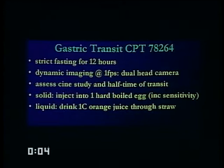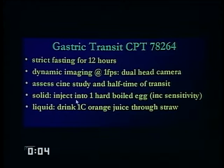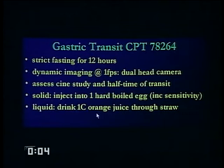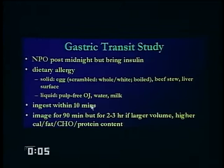Gastric transit studies are done because you have gastrostasis or gastroparesis, typically due to diabetes or some neurogenic problem. You get a very specific meal. If it's a solid meal, you get one hard-boiled egg — no butter, no toast, no bacon. If we're assessing liquid transit time, you drink one cup of orange juice through a straw, no glugging it down. You have to standardize your methods of intake, otherwise you can't use standard numbers. This brings complications with patients who have food allergies, dietary restrictions, or are on the Atkins diet. Alternatives include milk or soy. You must ingest it within 10 minutes, then imaging continues for the next 90 minutes.